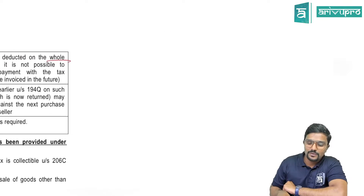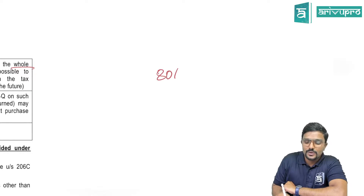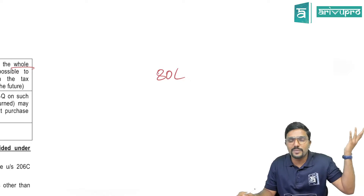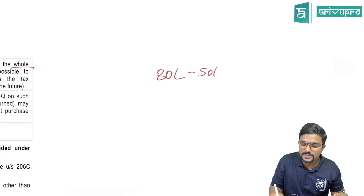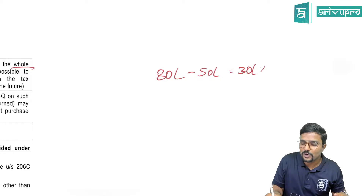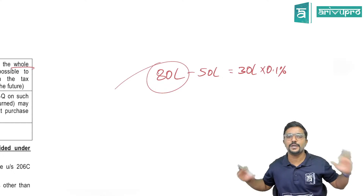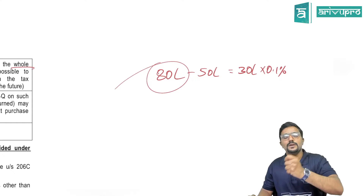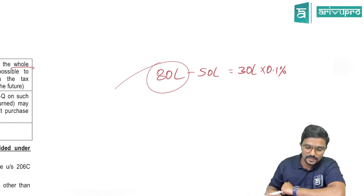For example, assume the buyer is making an advance payment of 80 lakh to the seller. Since there is no breakup available in this advance payment, TDS is deducted on 80 lakh minus the 50 lakh threshold — that is 30 lakh — at 0.1%. The entire 80 lakh is taken as is, with no separation of tax component, because the breakup is not available at the time of advance payment.